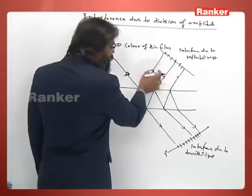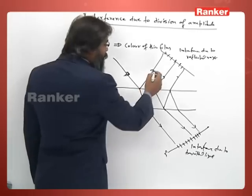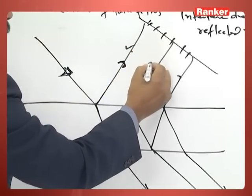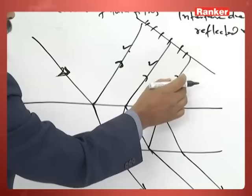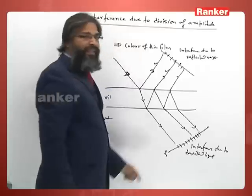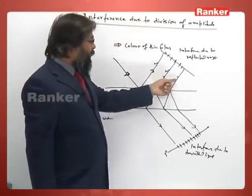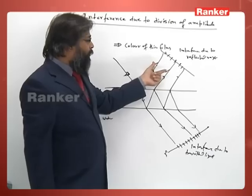The amplitude of all these waves drastically decreases. Generally the amplitude of these two is taken. This third amplitude and fourth, these amplitudes decay and they do not contribute too much in interference pattern because their amplitudes are small compared to this.